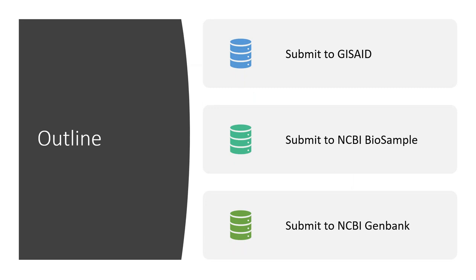Today's outline: we'll start with how to submit to GISAID, then how to submit to BioSample, and then to NCBI GenBank. Different labs do submissions in different orders. Some use command line to submit to GISAID and GenBank simultaneously. CDC submits to GenBank first, then GISAID. We do it in this order — GISAID, then BioSample, then GenBank — and I'll go over the reasons. It's easiest, makes more sense, and is more streamlined to link all your data together.